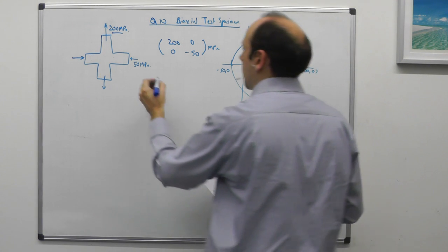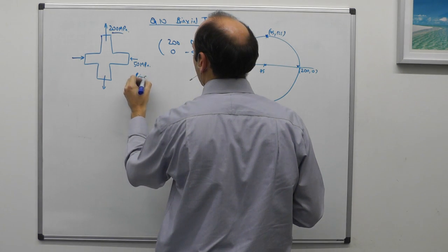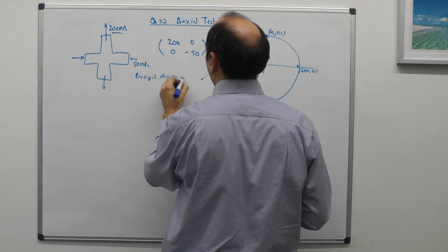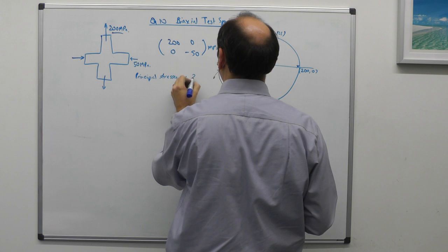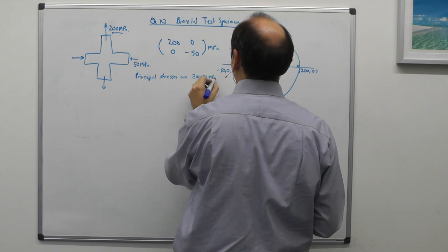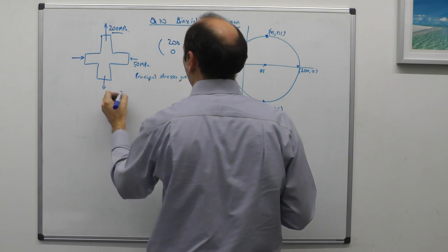So the principal stresses are 200, minus 50 MPa. They're what we were originally given.